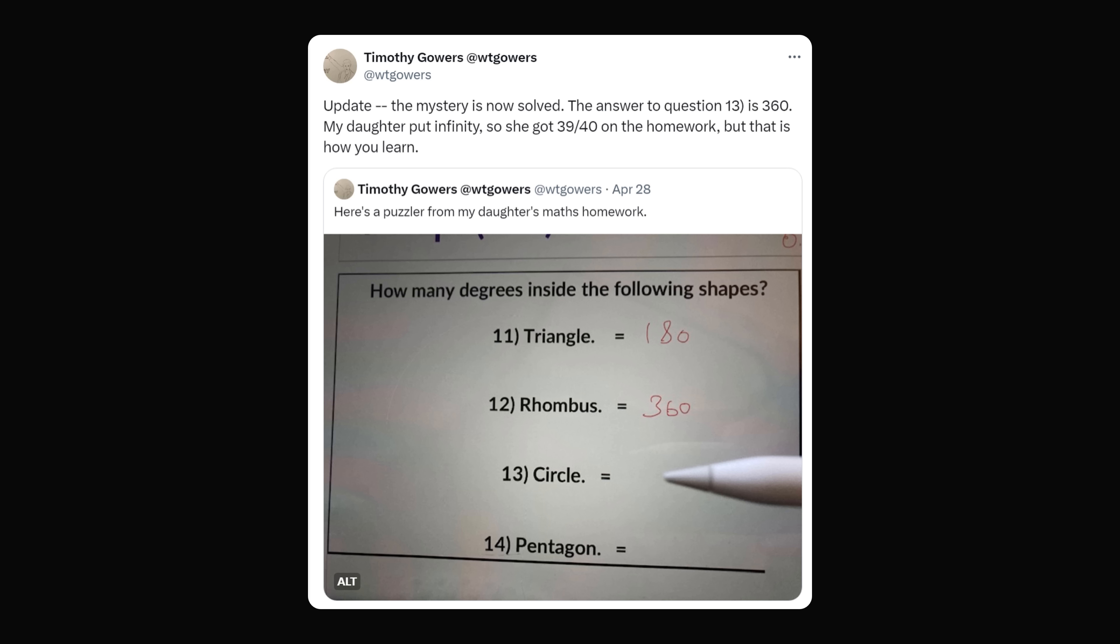The answer to the question is 360. My daughter put infinity, which was marked wrong, so she got 39 out of 40 on the homework. But that is how you learn. Many people were upset with the grading. They felt that either infinity should have been accepted as the correct answer, or the question could have been thrown out because it was poorly phrased.